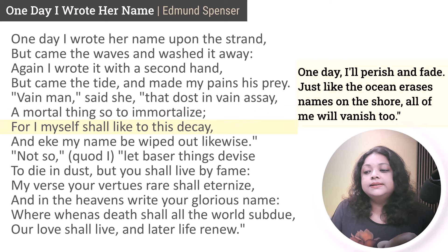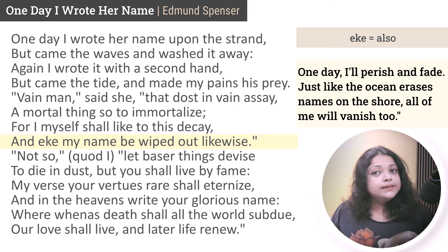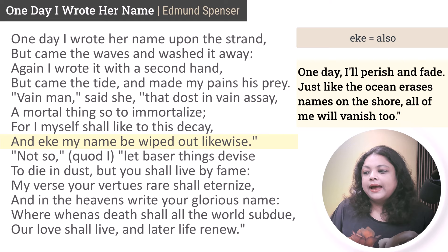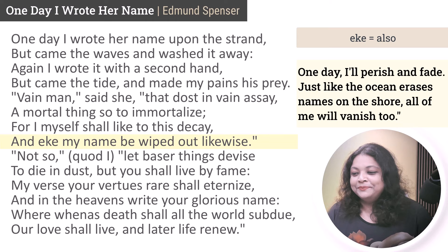This is his mistress or lady love's reply, and she says: 'For I myself shall like to this decay, and eek my name be wiped out likewise.' 'Eek' here means 'also.' Just like the name which is getting wiped away by the waves, she is also going to be wiped away from this world the moment she dies. No matter what he does, she is not going to be immortal because she is a human being. This woman is definitely very realistic, and she tries to tell him that she is going to die, so what is the point of writing her name on the sand? Interestingly, she uses the word 'eek,' which now means 'also,' and this word has also been wiped away from modern usage.